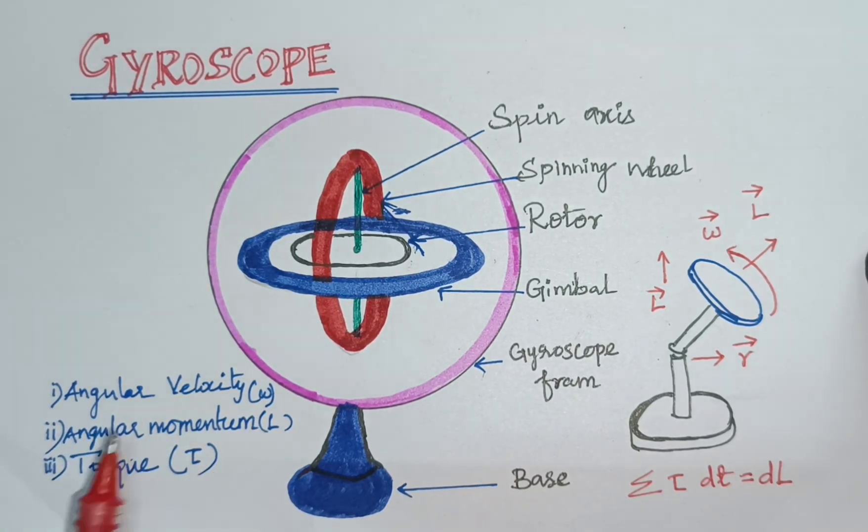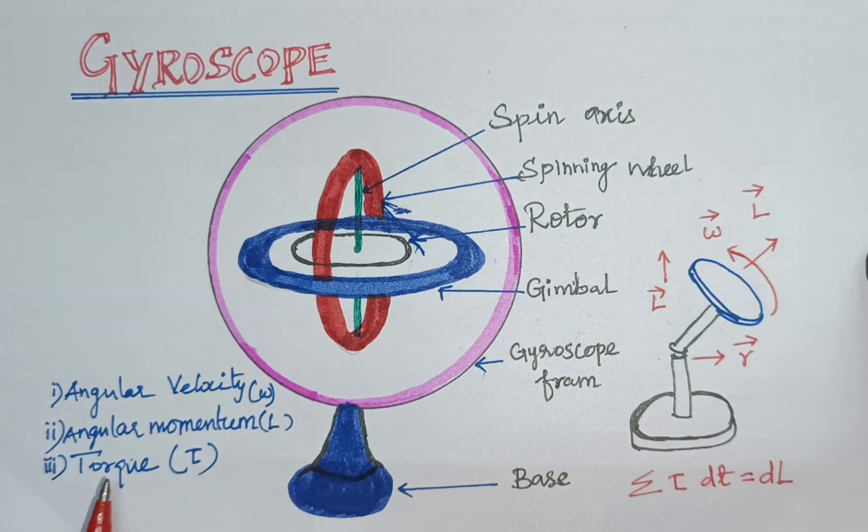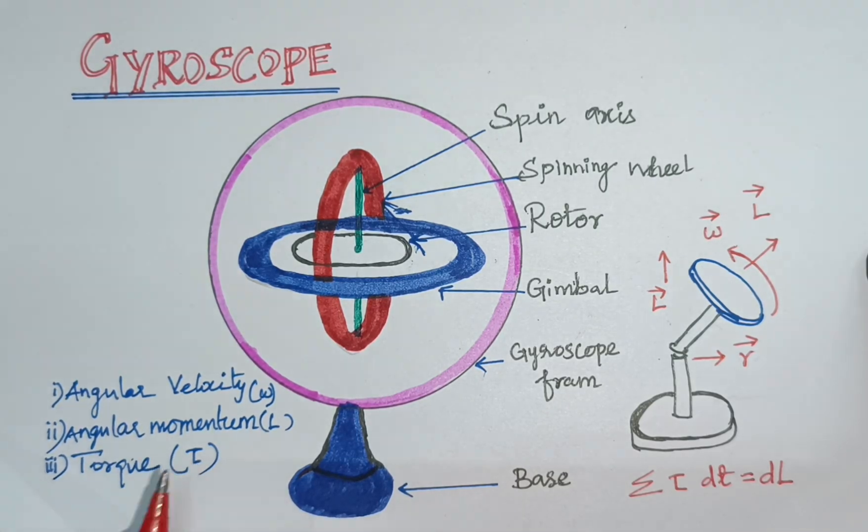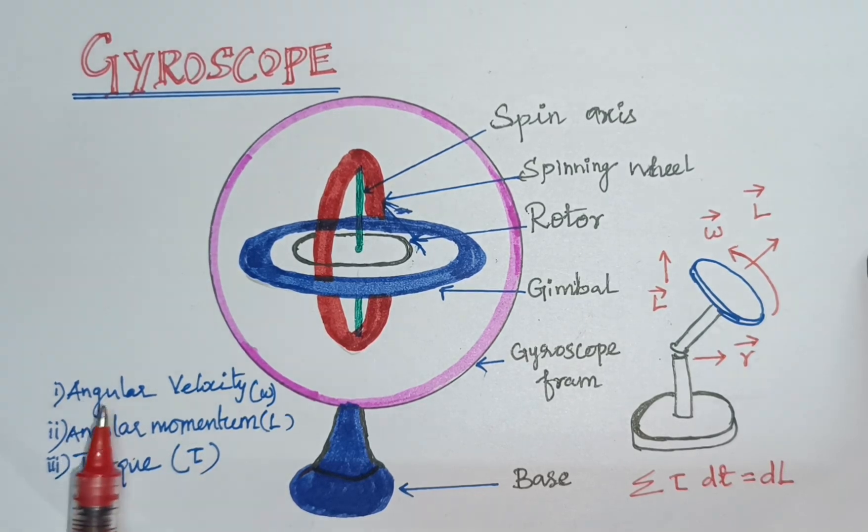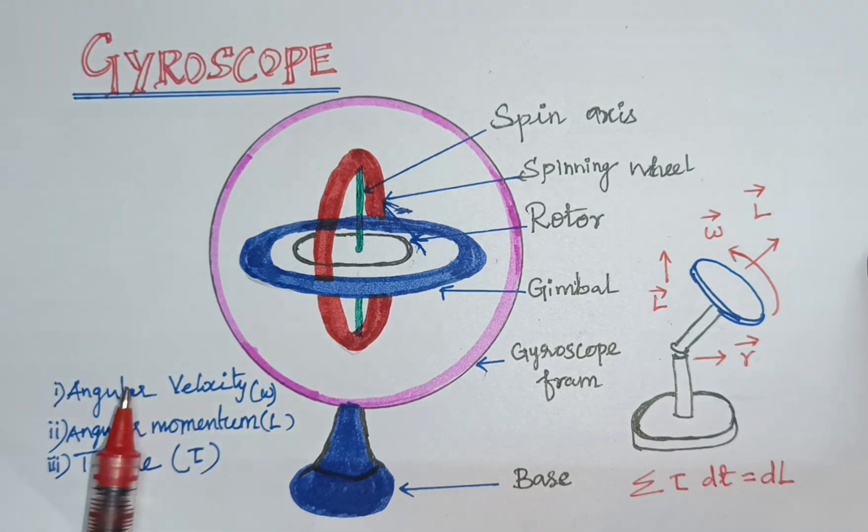Three parameters. One is angular velocity, second angular momentum, third one is torque. If you change the torque, that angular velocity will change, and the angular momentum will change.